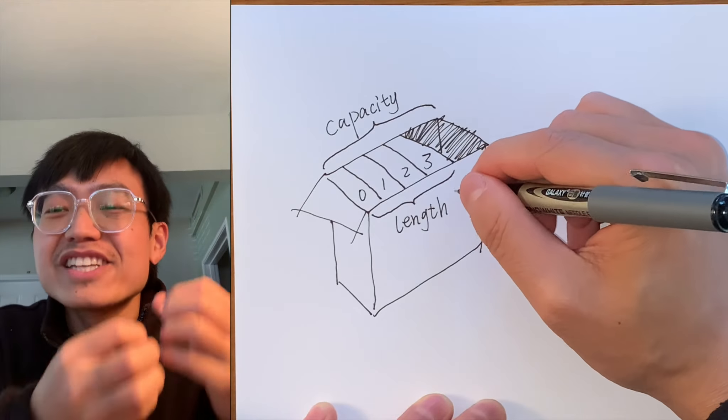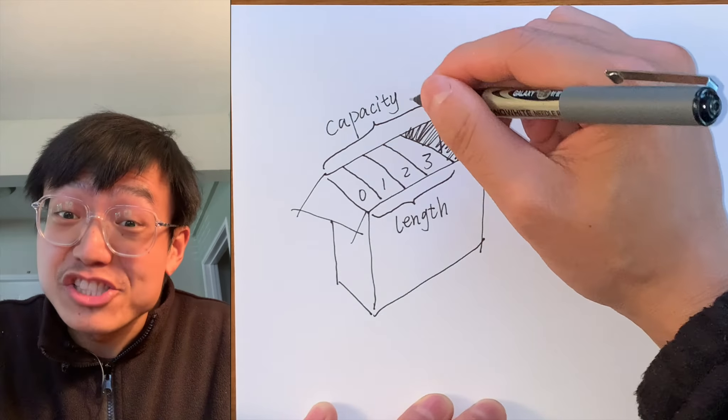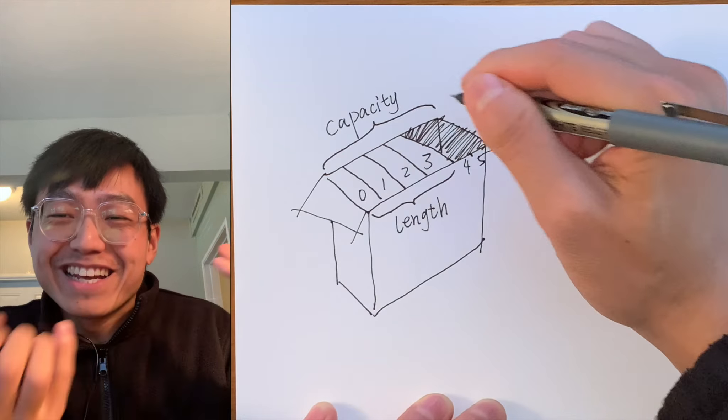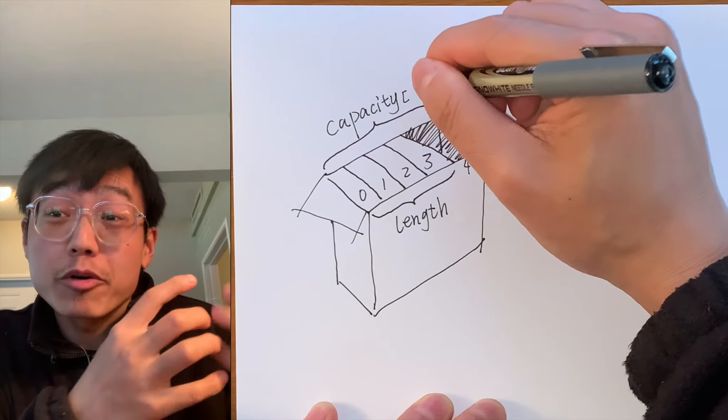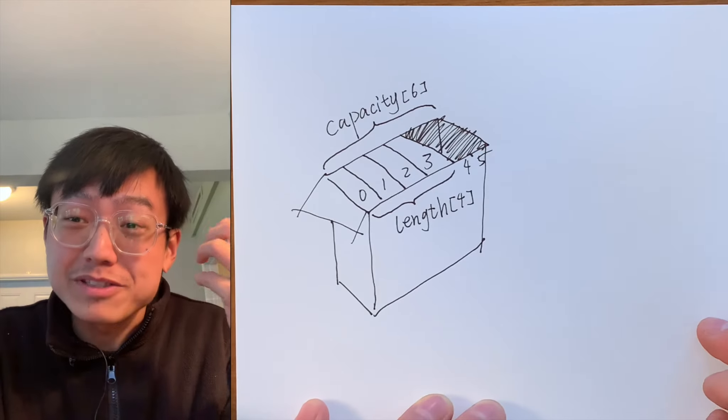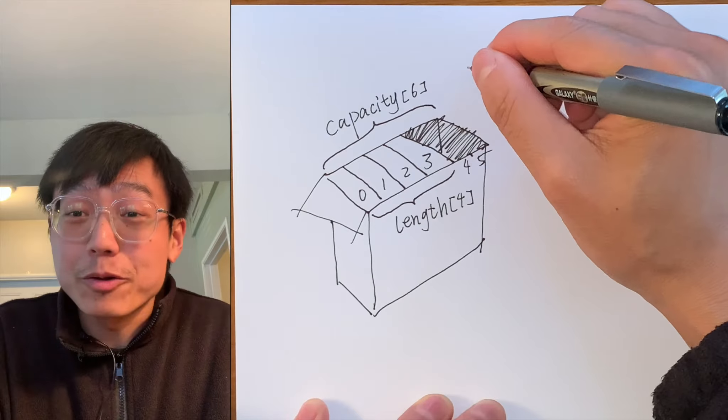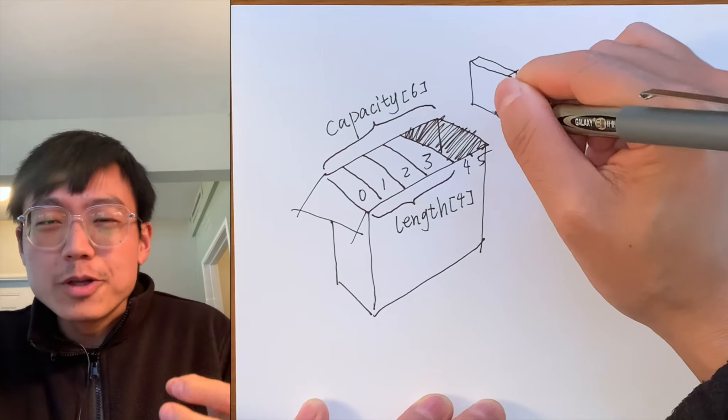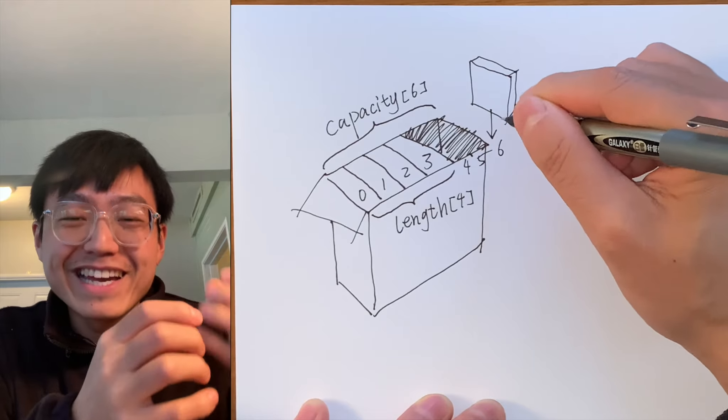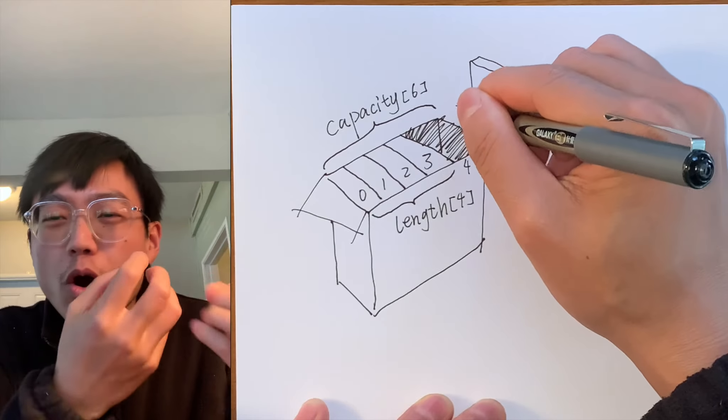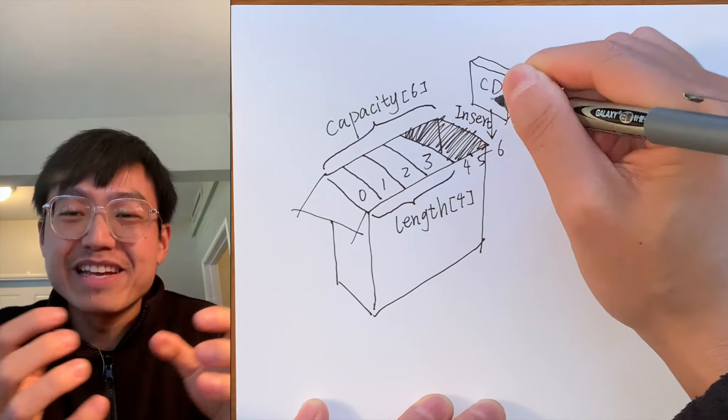Going back to our DVDs in cardboard box analogy, changing the capacity of an array could be akin to trying to make a cardboard box bigger. Trying to make a fixed size cardboard box bigger is impractical, and it is the same as an array on the computer. So what do we do if we get a seventh DVD and we'd like all our DVDs in the same array?